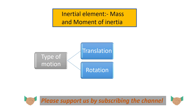Here we will give a brief idea of what we mean by translation and rotation. Translation motion is defined as the path followed by the center of mass of the body. Rotation motion is defined as the path traced by any point located on the body, or the CG of the body, with respect to any other point located on the body or even outside the body.